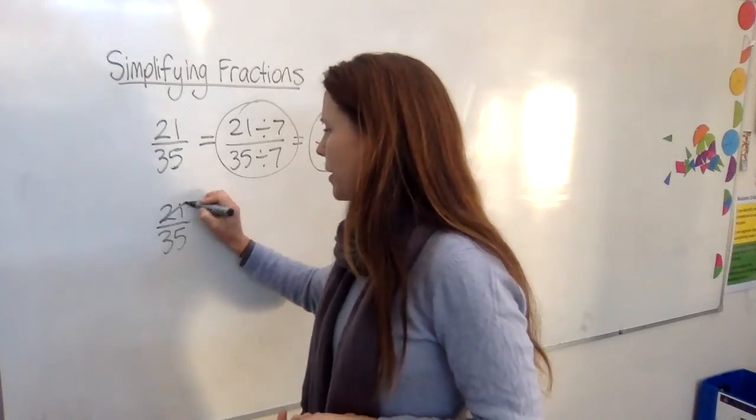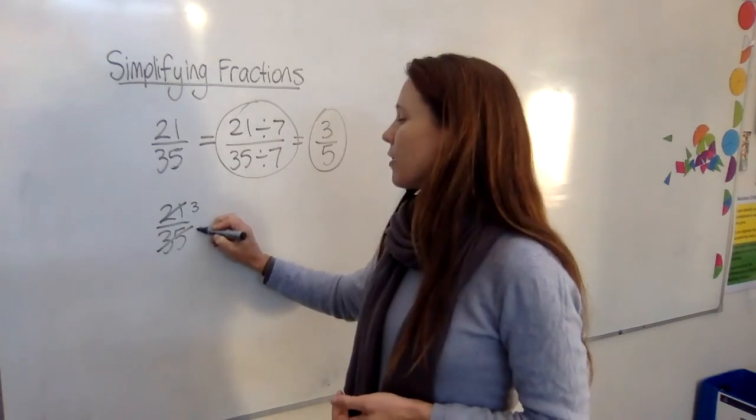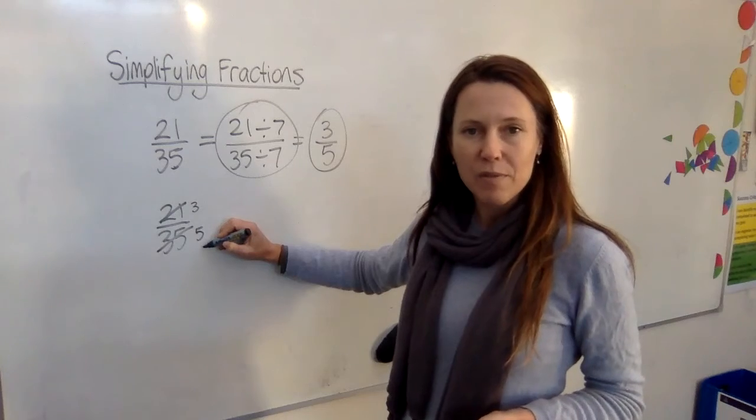And in your head, you say, divide this by 7 and I'll get 3. Divide this by 7 and I'll get 5. And the answer is just looking at you there, 3 fifths.